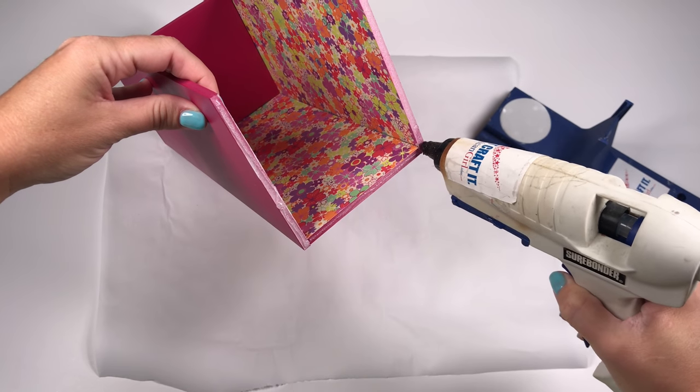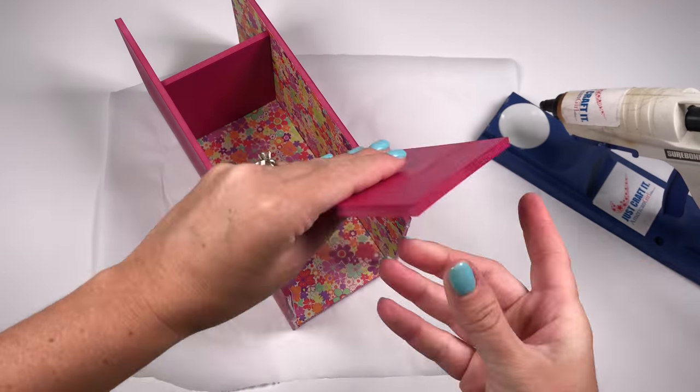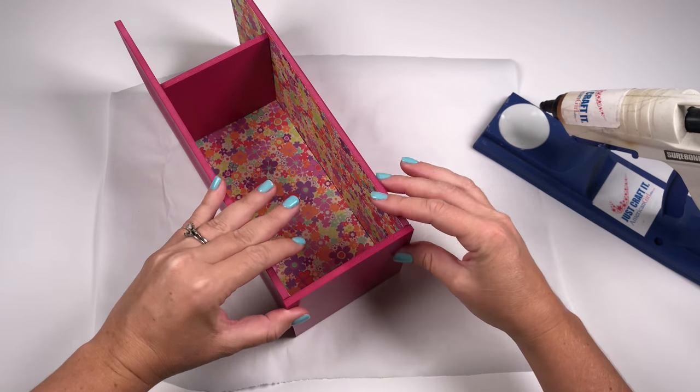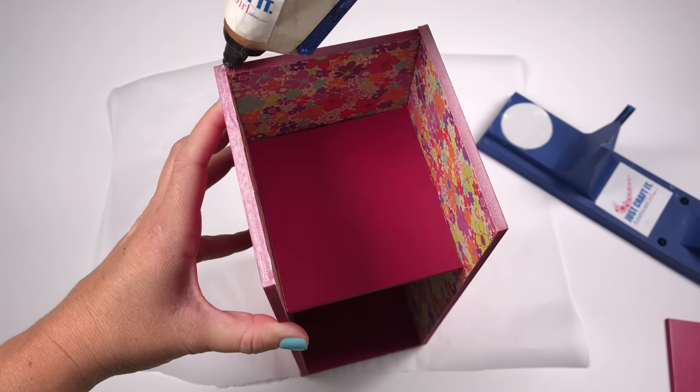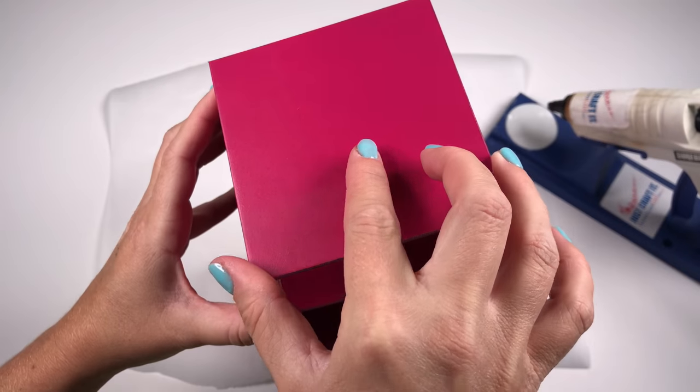Then, apply the hot glue on the open edge of the bottom of the locker, and stick the bottom on. Stand your locker up, apply the hot glue on the open edge of the foam board, and then place your top on.